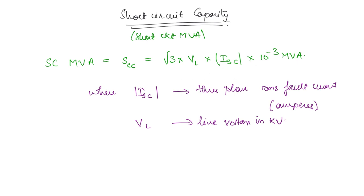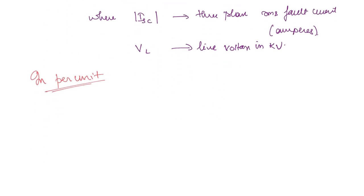Now we will find the short circuit MVA in terms of per unit values. We start with the short circuit current in per unit. From the previous lecture, this is equal to the pre-fault voltage Vf in per unit divided by the reactance X in per unit.